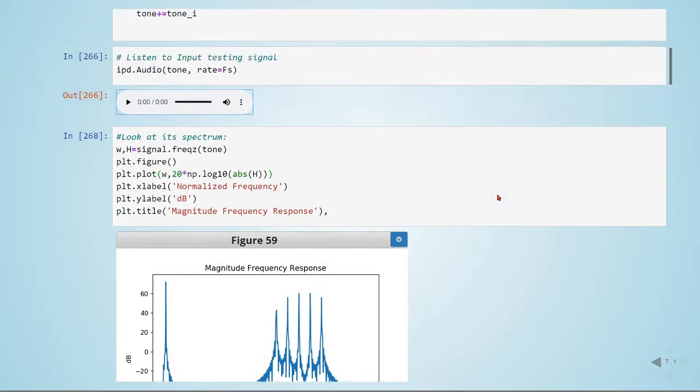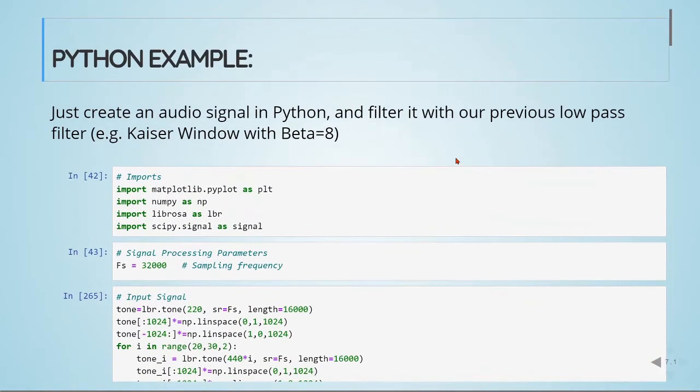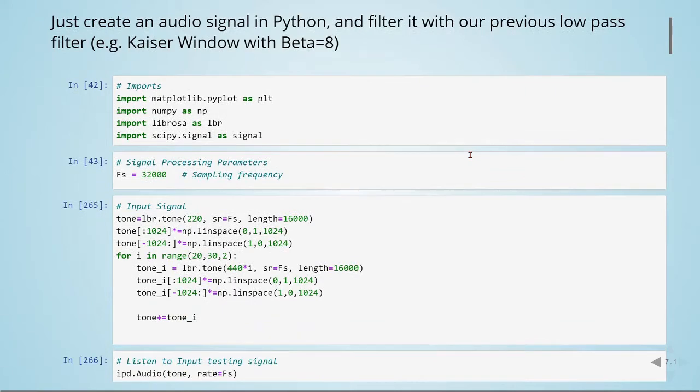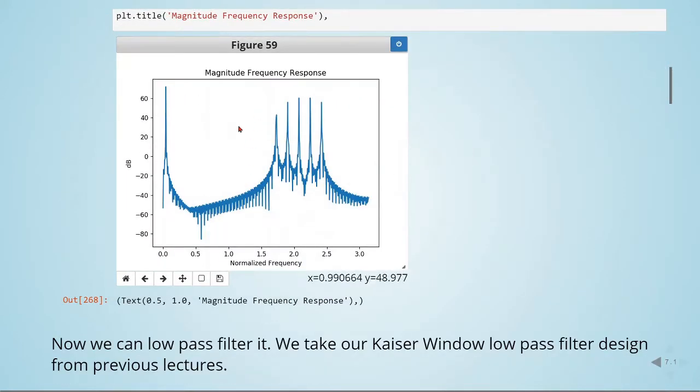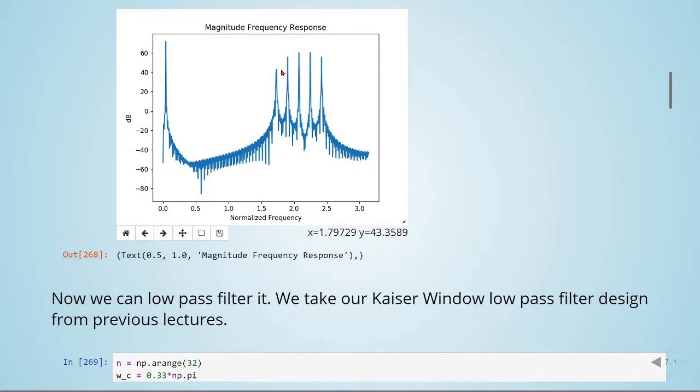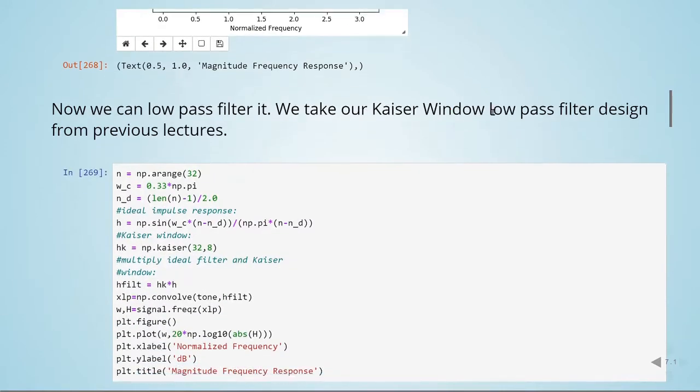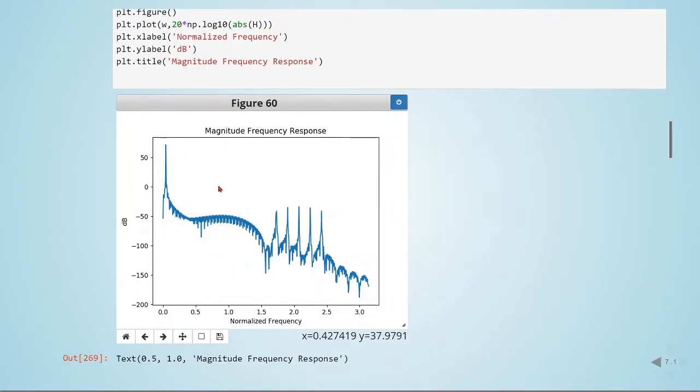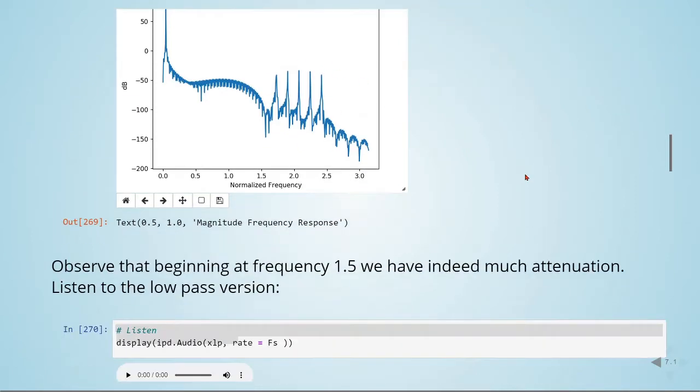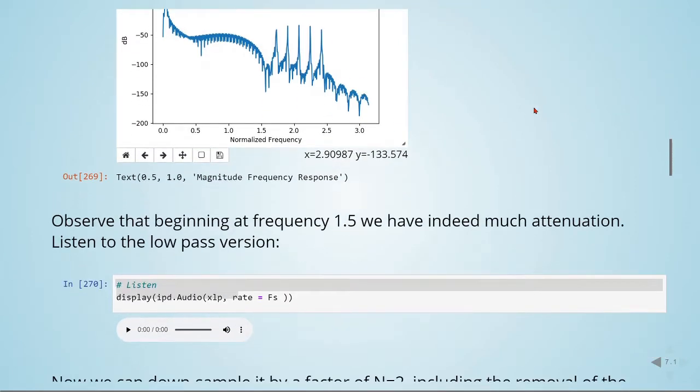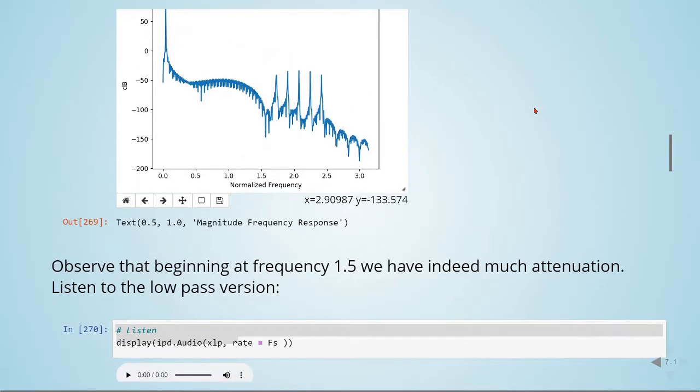For example, if we're doing downsampling when n equals 2, we would have up to 8 kilohertz and would like to filter out everything above 8 kilohertz. We could use this filter and we see that we have indeed above the half pi everything is attenuated. We observe at the normalized frequency 1.5 we have indeed much attenuation.